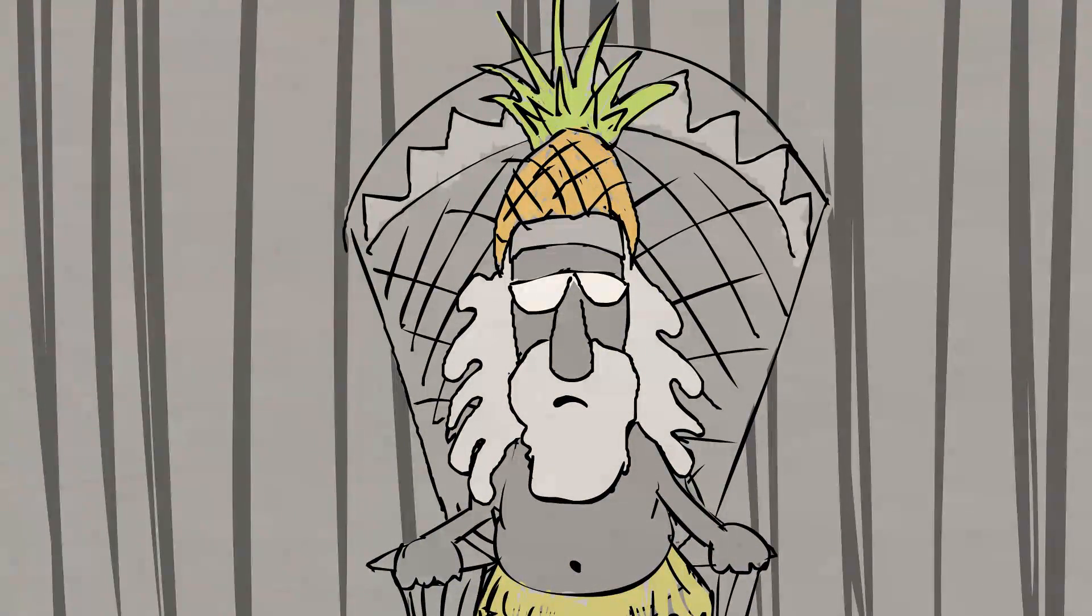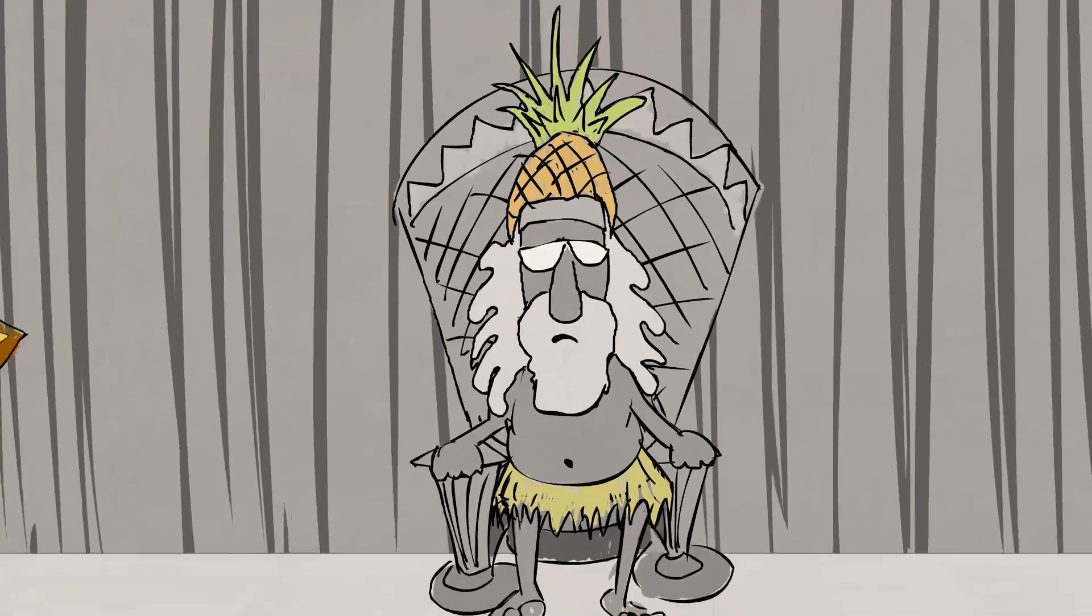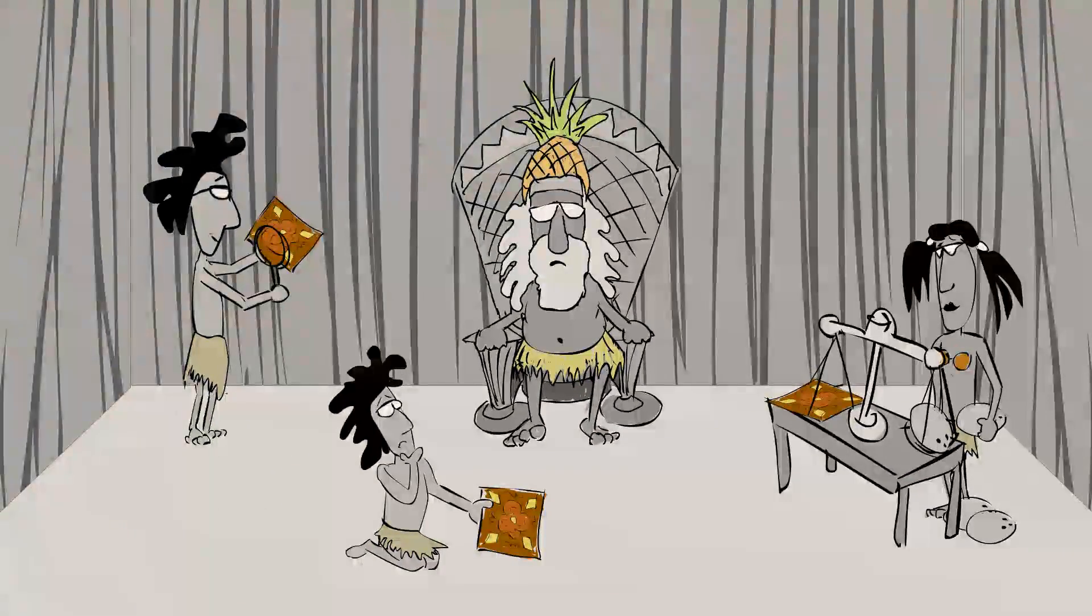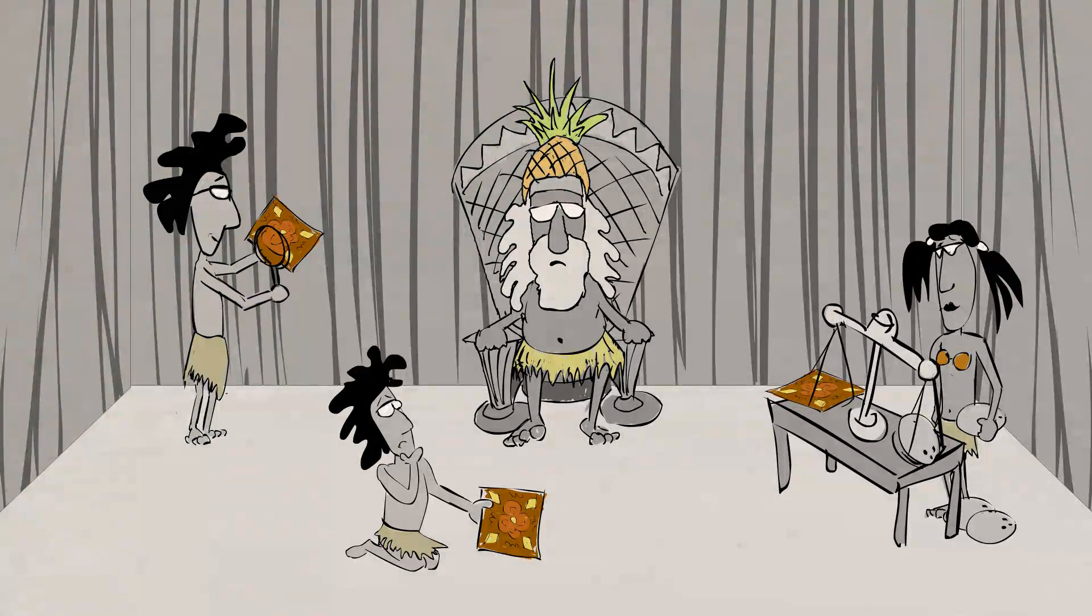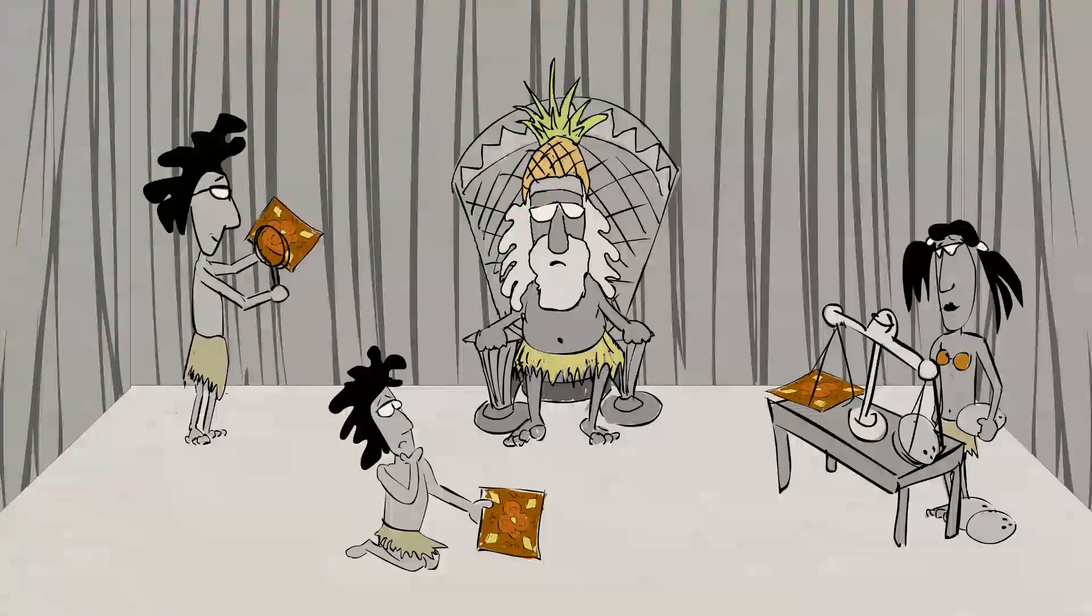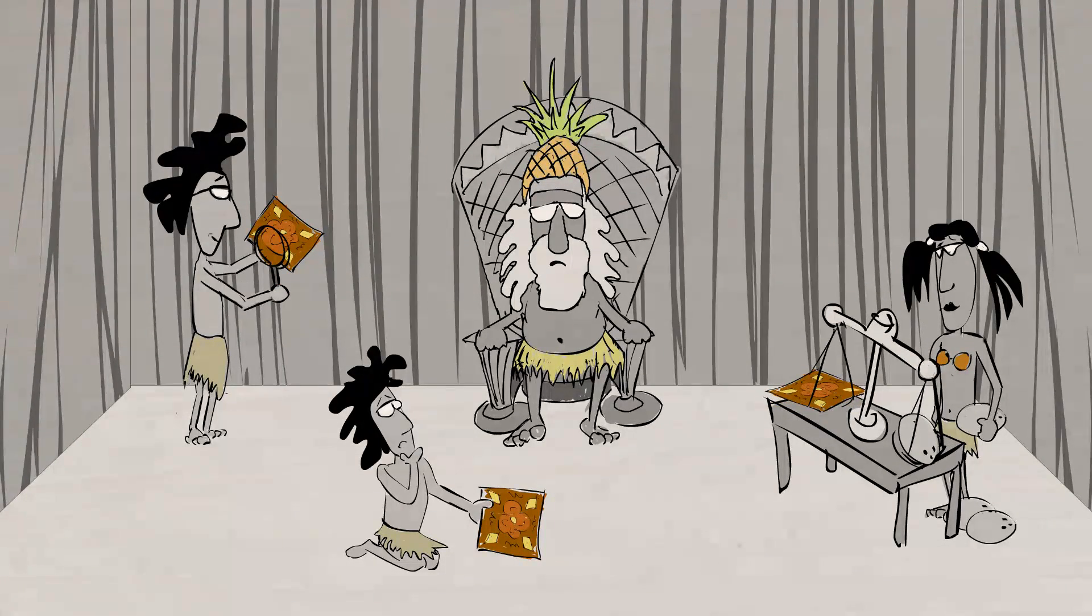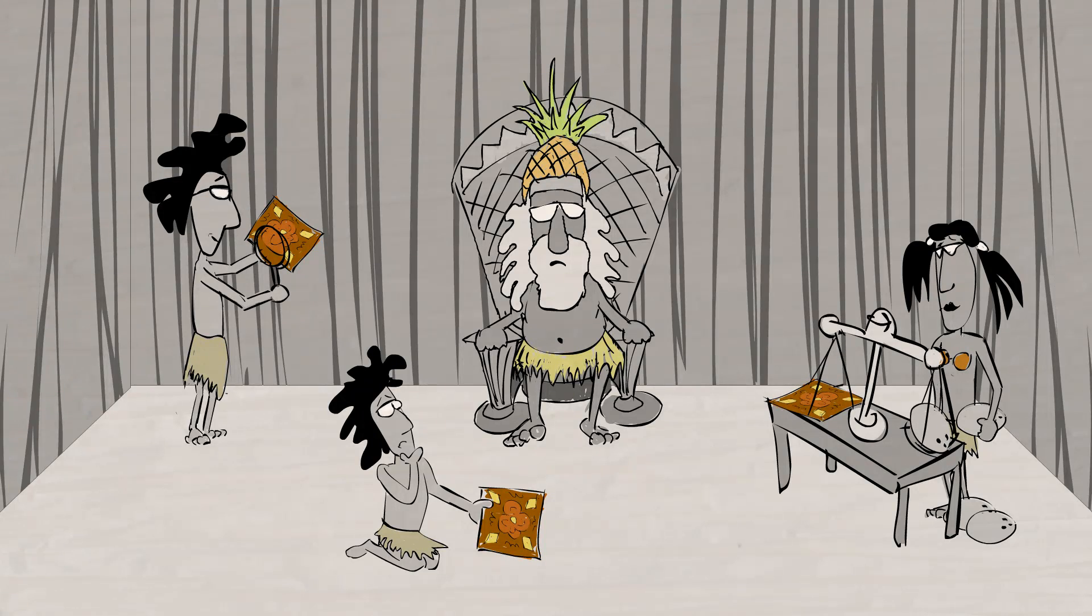For instance, when the king of Coco Loco wanted to tile the floor of his rectangular hut with very expensive imported Bongo Ponganian tiles, we needed to know exactly how many square tiles to buy from the Bongo Ponganians.